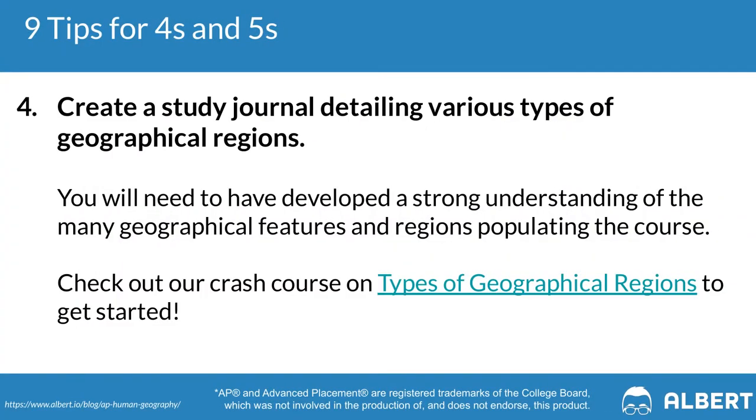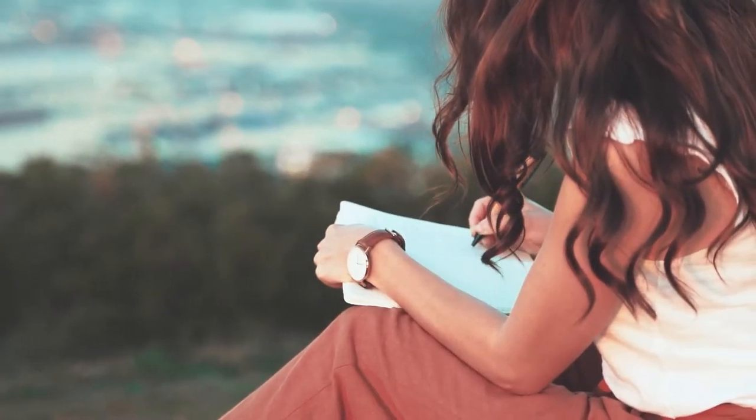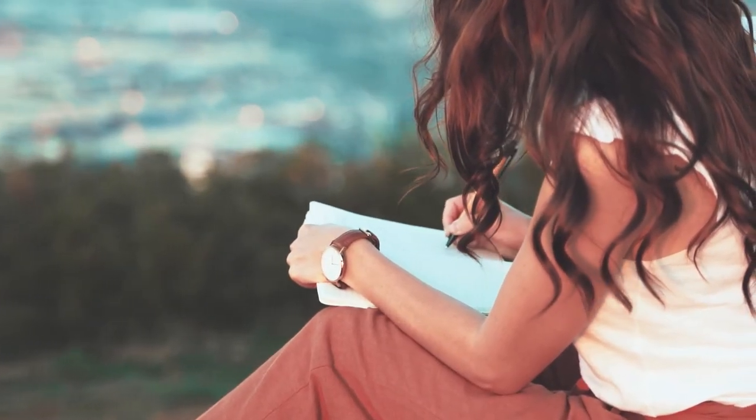The fourth step that we recommend when it comes to studying for AP Human Geography is to create a study journal of the different geographical regions that you're learning. This way, over the course of a school year, you're going to have a library of different facts and key connections that relate to different geographical regions that you've studied. In this study journal, make sure that you're including not just basic facts about a region, but also how it connects to the other regions that you've already learned. One of the keys to success in AP HUG is demonstrating how you understand the connection between one region and another.